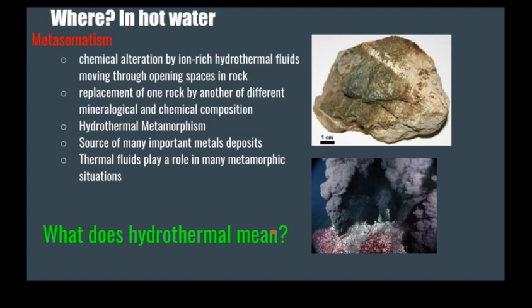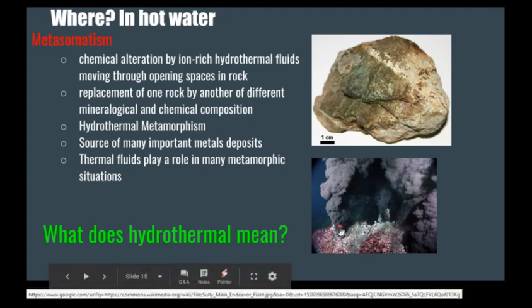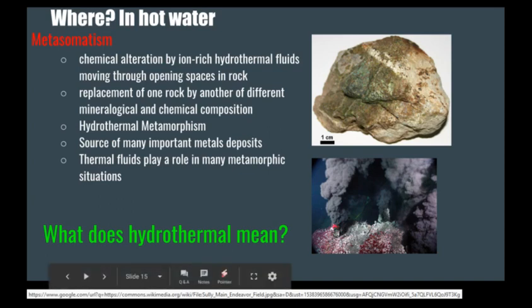Metasomatism is when you have ion-rich hot fluids moving through cracks and pore spaces in your rock. It can take those ions — the little charged elements floating in the water — and exchange those with elements that are in the rock. This is how you get hydrothermal metamorphism. This type of metamorphism with these hot fluids can create very valuable mineral deposits. A lot of what we mine for copper, silver, and gold are related to hydrothermal metamorphism.